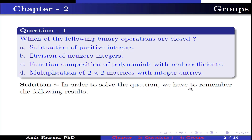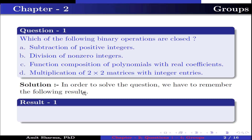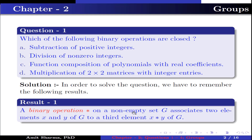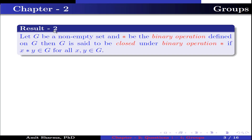In order to solve the question, we have to remember the following results. Result 1: a binary operation star on a non-empty set G associates two elements x and y of G to a third element x★y of G. Result 2: let G be a non-empty set and star be the binary operation defined on G. Then G is said to be closed under binary operation star if x★y belongs to G for all x, y belonging to G.